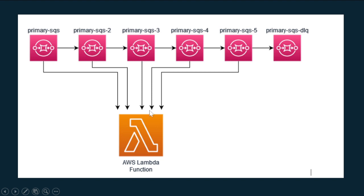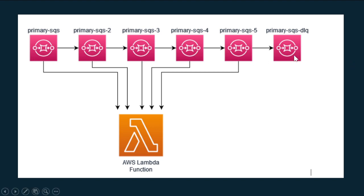For SQS 3 I increased the visibility timeout to two minutes, so a failed message moves after two minutes. Then in SQS 4 the timeout is four minutes. In the fifth queue I process the message the same way, and if it finally fails it moves into the last DLQ. The difference between the last DLQ and the others is that there is no listener on the last one.